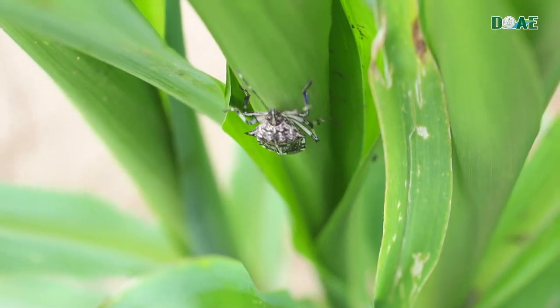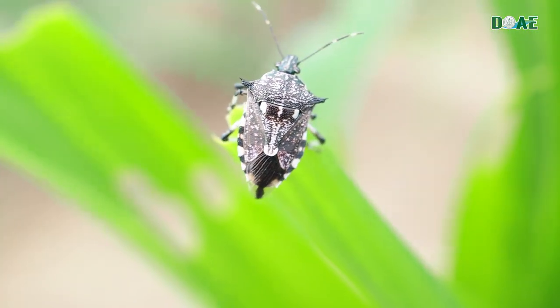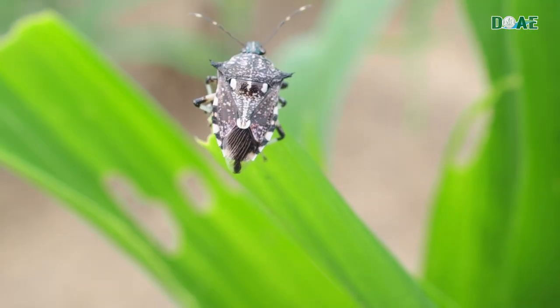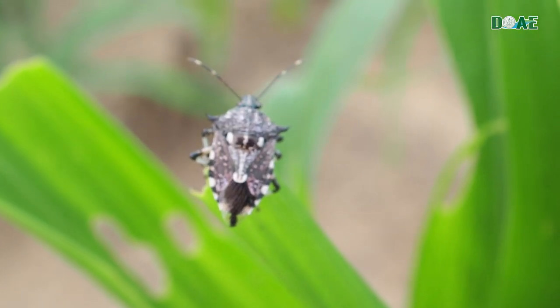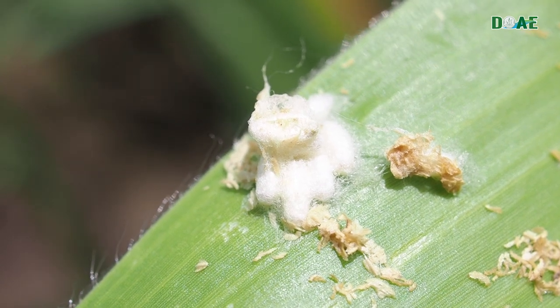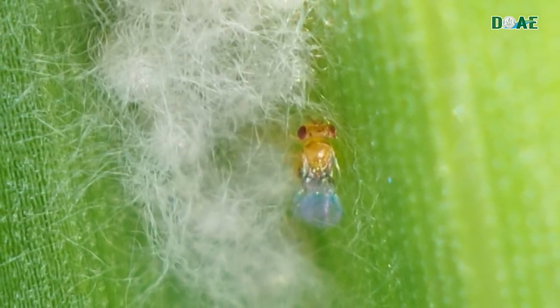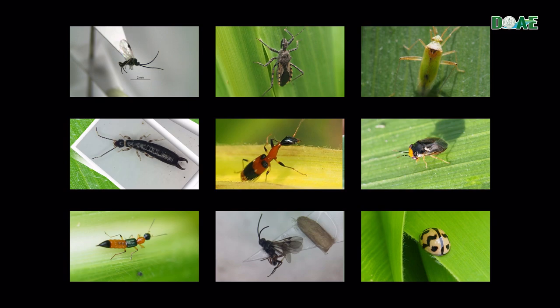Biological control is the best method to control fall armyworm because it can be combined with other IPM methods. The bioagents used to control fall armyworm include both naturally occurring and augmented types. There are 22 species of bioagents found for monitoring in corn fields, and naturally occurring biological control of fall armyworm has been found in Thailand.